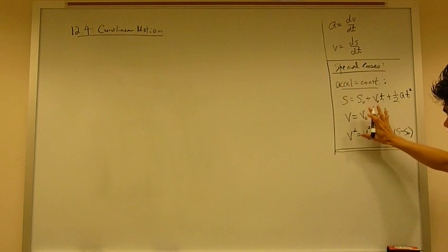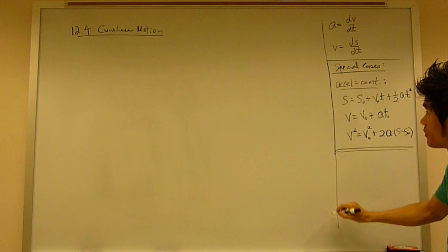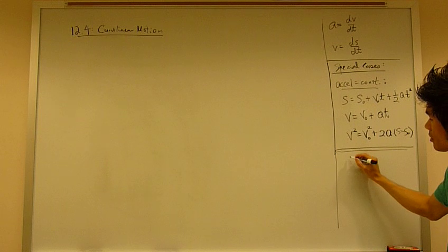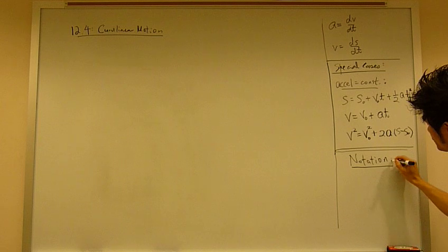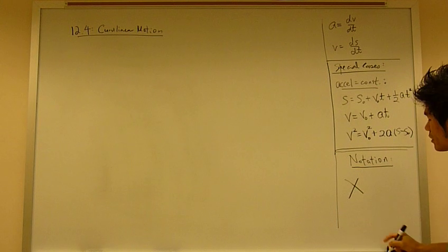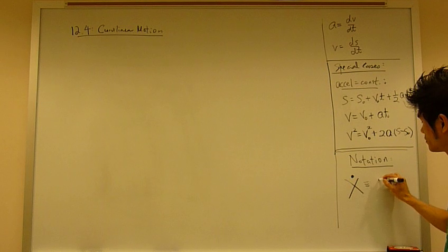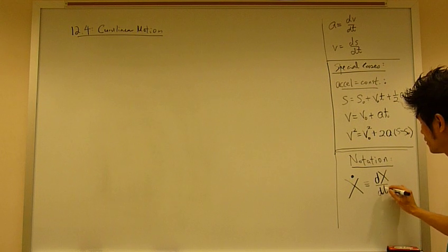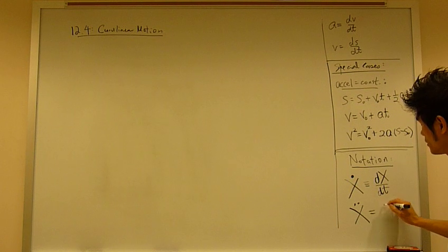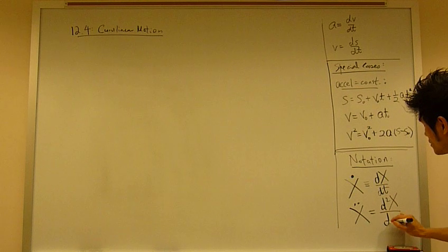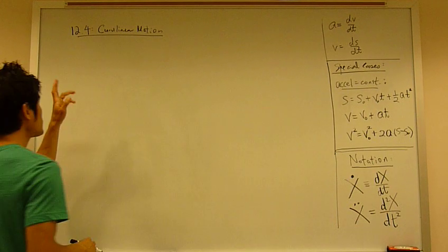So we need these equations for curvilinear motion later. And before we discuss curvilinear motion, we also need to talk about special notation, where the symbol, any symbol with a dot on top of it, simply means the first derivative with respect to time. And anything with double dots on top of it means the second derivative.